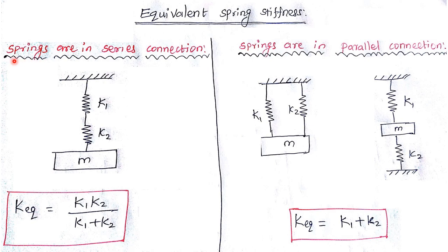For equivalent spring stiffness, springs can be connected in series or in parallel. A useful shortcut to identify the connection: if you cut any one spring and the mass becomes disconnected from the support, the springs are in series. If cutting one spring still leaves the mass connected via the other spring, they are in parallel.